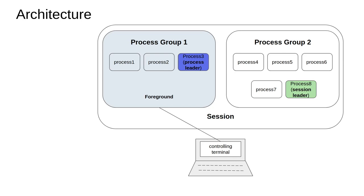As you can see here, there are two process groups that have been defined. One is process group 1, which is a foreground process, and process group 2, which is a background process. So what is the difference between a foreground process and a background process?